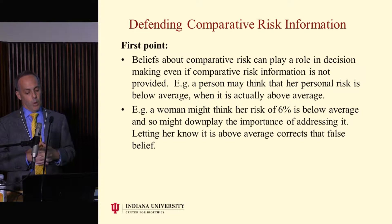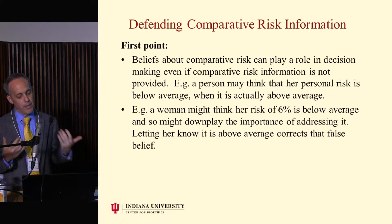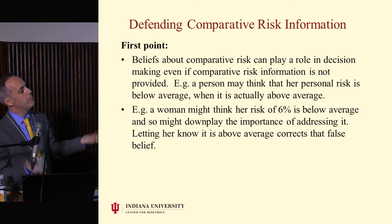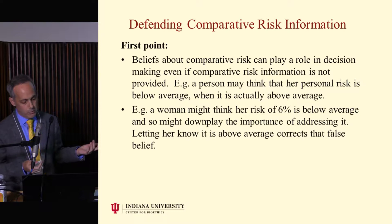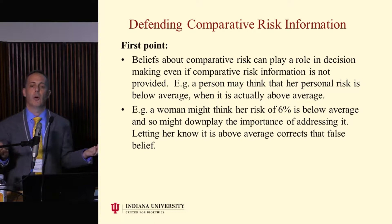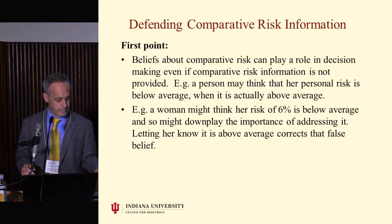Here's a quote: 'If a prevention strategy reduces a person's risk by half, it should not matter whether others receive greater or lesser benefit from the pill.' It's irrational to give it. So I wrote some defenses. Here's my first point: beliefs about comparative risk can play a role in decision-making even if comparative risk information is not provided. A person may think her personal risk is below average when it's actually above average. Just leaving it out of a decision aid doesn't keep it off the table. People have all kinds of views about whether their risk is above or below average, and this may be wrong. Letting her know it's above average corrects a false belief.